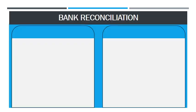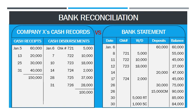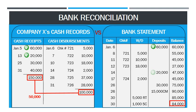Here, we are given the company's cash records and the bank statement provided by the company's bank. Observe that the ending cash balances are not equal — the cash balance per books is $50,000 while the cash balance per bank is $84,000. We investigate the difference by simply comparing the items in the company's cash records and the bank statement. Observe that some items present in the company's cash records are not reflected in the bank statement — these are referred to as the bank reconciling items.